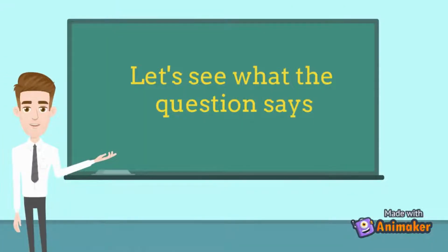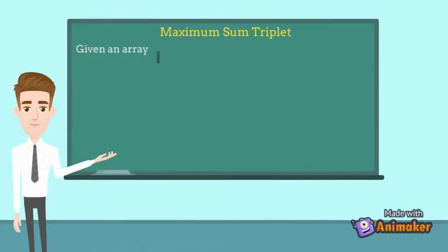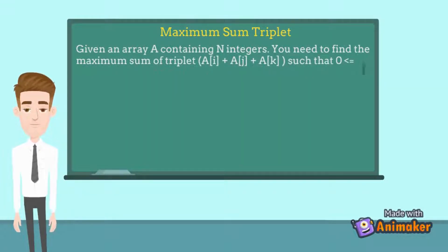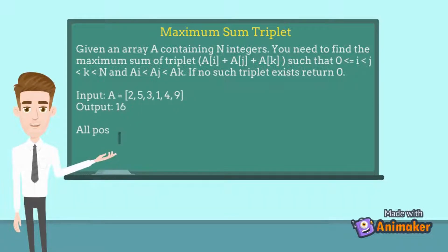Let's see what the question says. Given an array containing n integers, you need to find the maximum sum of triplet A[i] + A[j] + A[k] such that 0 <= i < j < k < n and A[i] < A[j] < A[k]. If no such triplet exists, return 0.